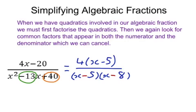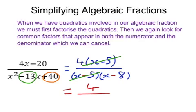So minus 5 and minus 8 go in the brackets. If you're not quite sure, a handy hint: notice the top has x minus 5 in it, so for us to simplify, we're going to need that x minus 5 on the bottom as well. We cancel out the x minus 5 on the top with the x minus 5 on the bottom, giving us a final answer of 4 over x minus 8.